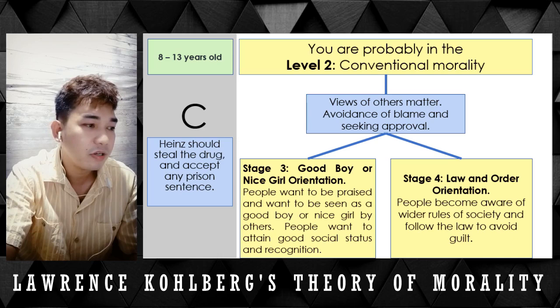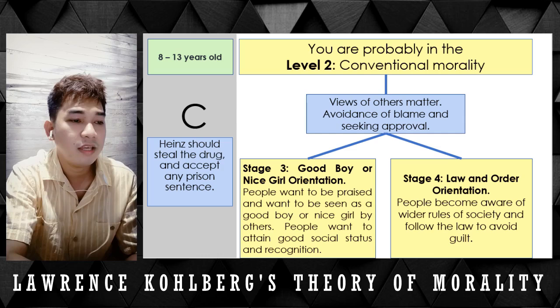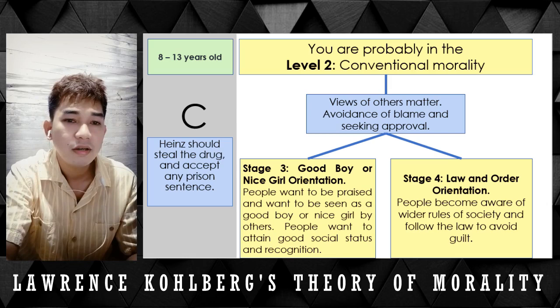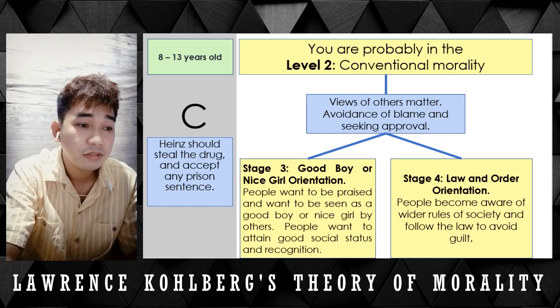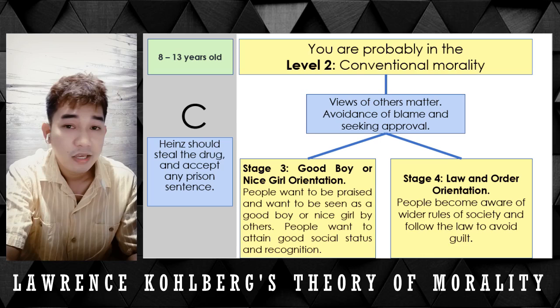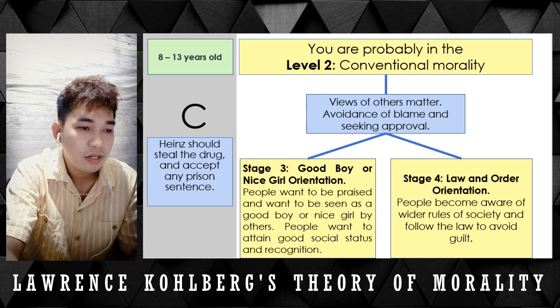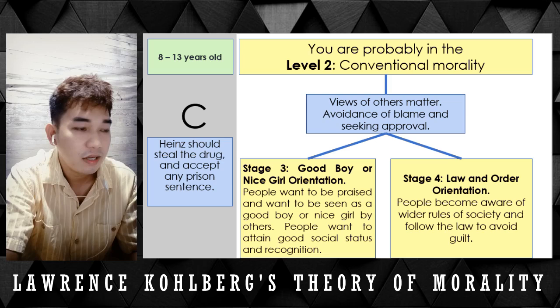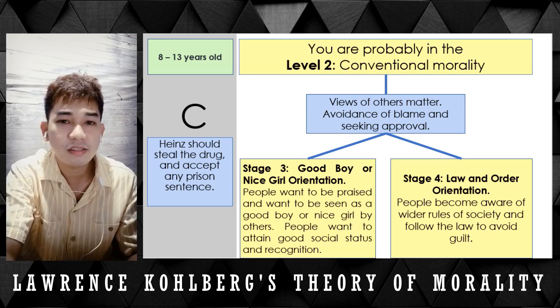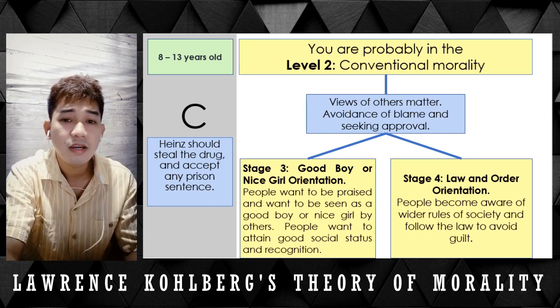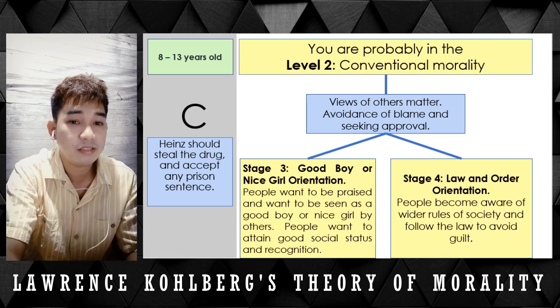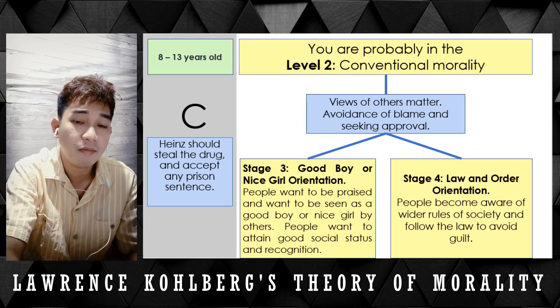Stage 4 is law and order orientation. People become aware of the wider rules of society and follow the law to avoid guilt. In the Heinz Dilemma, Heinz stole the drug and broke the law, and in return will face a prison sentence. Because he is aware of wider rules and follows the law to avoid guilt, he accepts the prison sentence. Another example: when we are driving and reach a traffic light that turns red, we stop — we are abiding the law. That is Stage 4, law and order orientation.